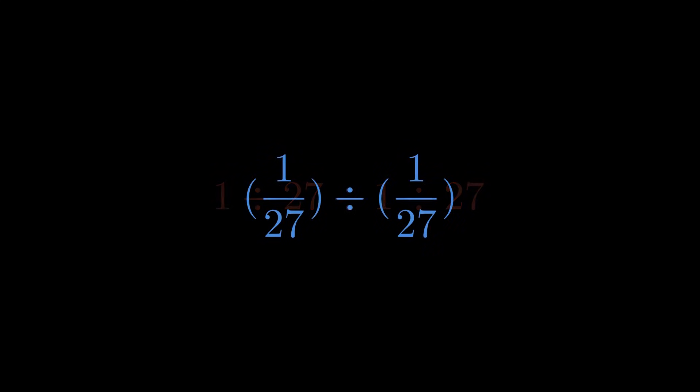Well, 1 divided by 27 gives us the fraction 1 over 27. So we'd have 1/27 divided by 1/27. Now, when we divide fractions, we multiply by the reciprocal.